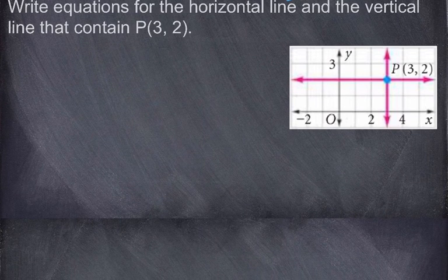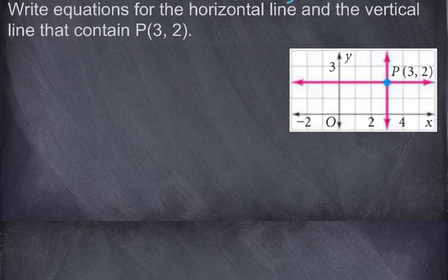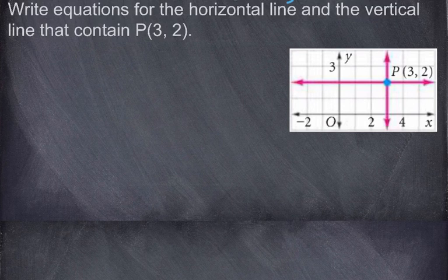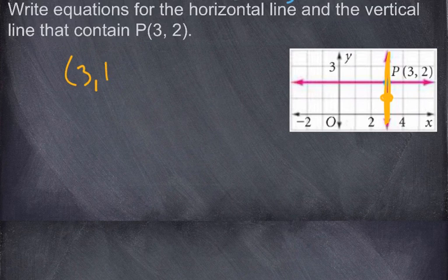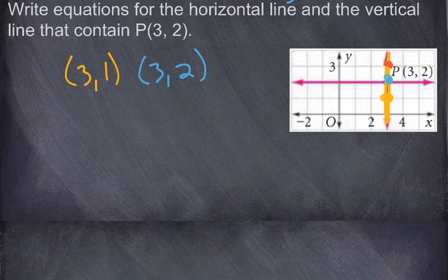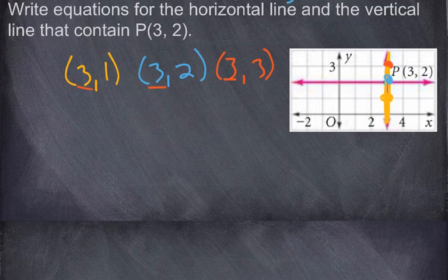For the last problem: write equations for the horizontal and vertical lines through point P (3, 2). For a vertical line, every coordinate on it has the same x value — over 3, up 1; over 3, up 2; over 3, up 3. So the equation is simply x equals 3, with no y value involved.